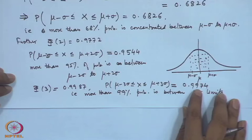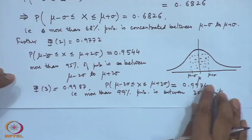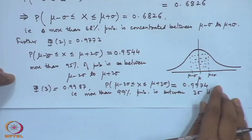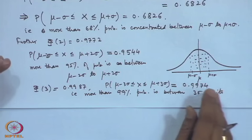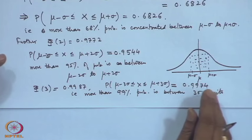If we consider 6-sigma limits, the probability of inclusion becomes approximately 0.999998, meaning the probability of being outside is about 1 in a million. These 3-sigma and 6-sigma limits are used in industry to assess process quality.